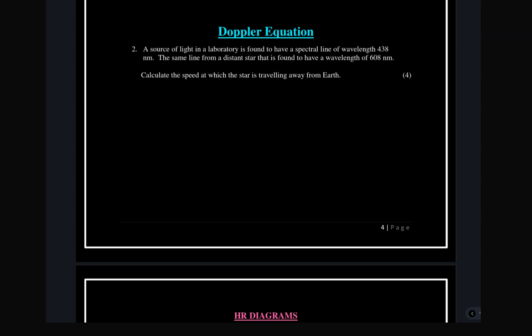The same light emitted from a distant star is found to have a wavelength of 608 nanometers — that is 10 to the power of negative 9 metres. We are supposed to calculate the speed at which the star is traveling away from earth. We are also given the speed of light, which is 3 × 10⁸ metres per second. The first thing we need to do is write the Doppler equation: change in wavelength over the reference wavelength equals the speed of the galaxy or star over the speed of light.